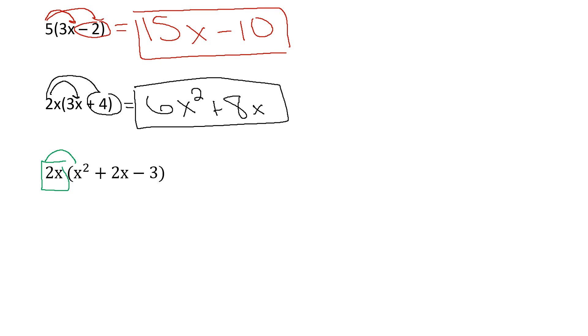So 2x times x squared. 2 times understood 1 is 2. x times x squared is x cubed. Remember, you add your exponents when you're multiplying. Now, 2x times 2x is positive 4x squared. Multiply your whole numbers. Add your exponents. 2x times negative 3 is negative 6x. And that's my answer, because those are not like terms, and I can't go any further.